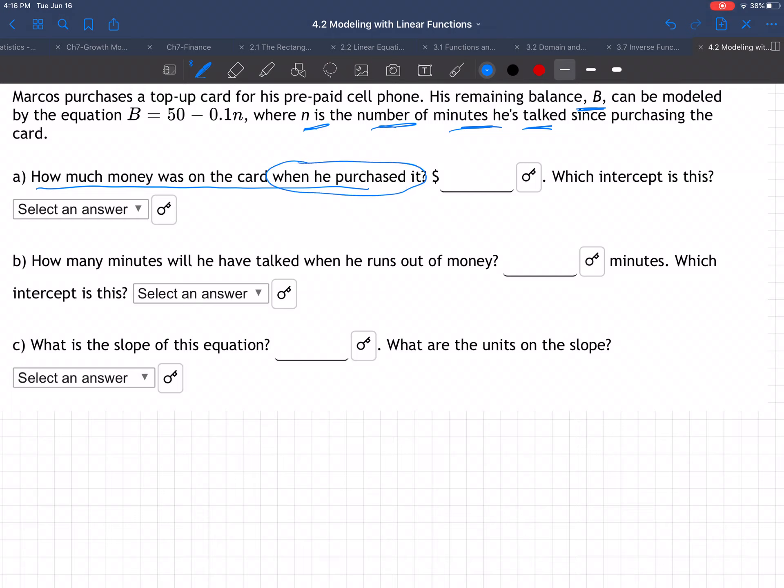When he purchased it, he hadn't talked at all, so N was zero. Substituting into the equation: B = 50 - 0.1(0). The 0.1 times zero term disappears, so B equals 50. There must have been $50 on the card when he purchased it. That 50 is the initial amount.